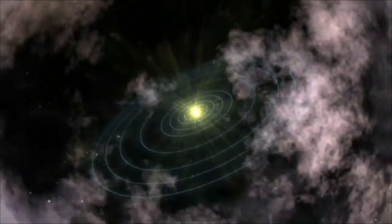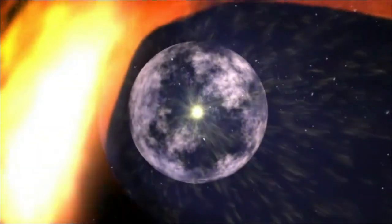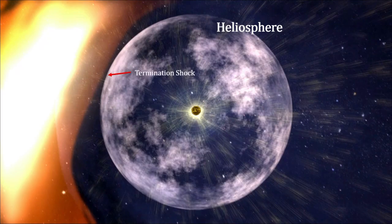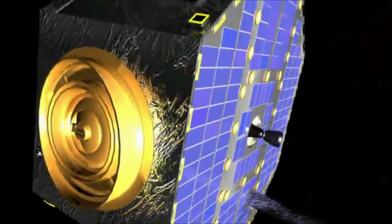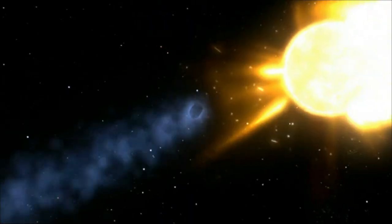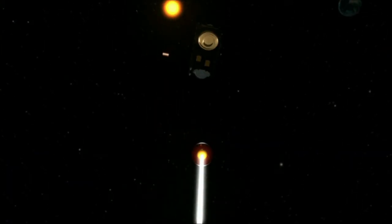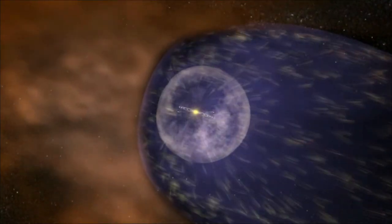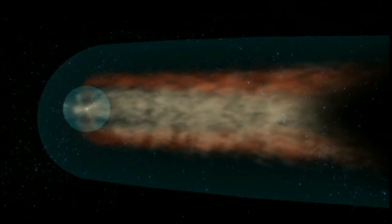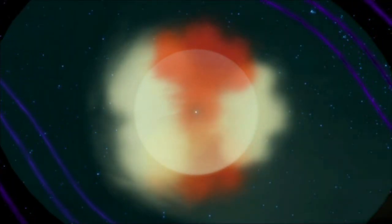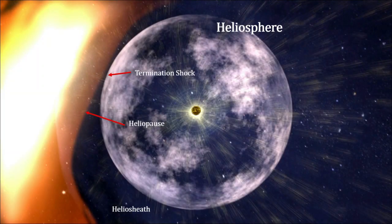The heliosphere surrounds our entire solar system like a protective cocoon, extending approximately 18 billion kilometers in all directions. Within this bubble, charged particles from the solar wind dominate, flowing outward from the sun and shielding our planets from much of the galaxy's cosmic radiation. For decades, scientists could only speculate about where this shield might end. Theoretical models placed the heliopause at dramatically different distances. By 1993, astronomer Bill Gurney had refined these predictions, suggesting the boundary might lie between 116 and 177 astronomical units from the sun. Our cosmic neighborhood was much larger than anyone had imagined.